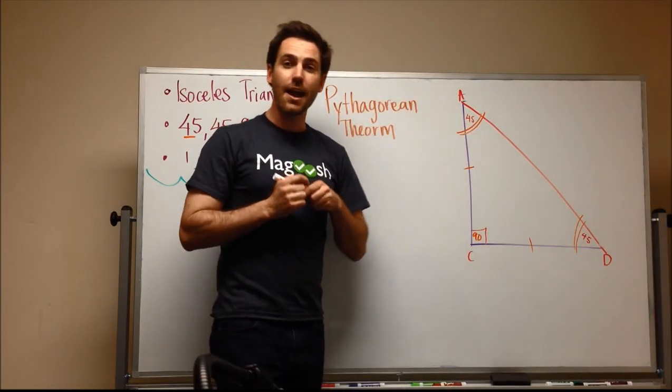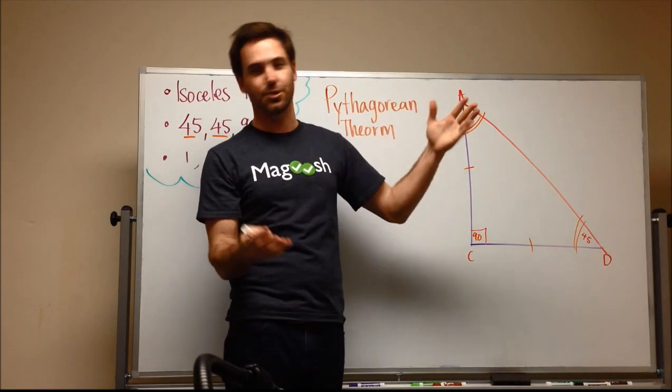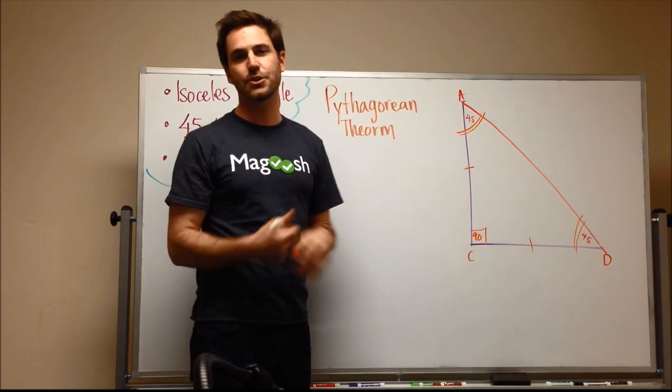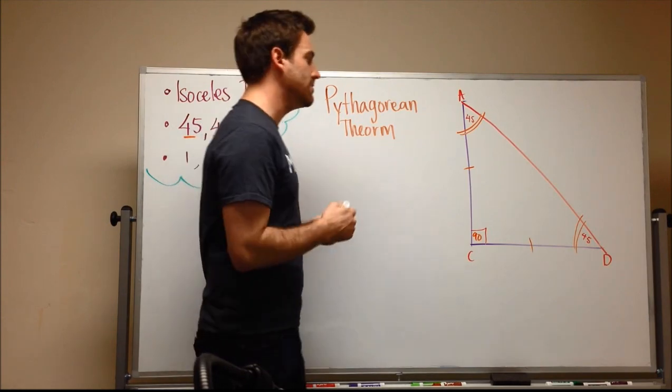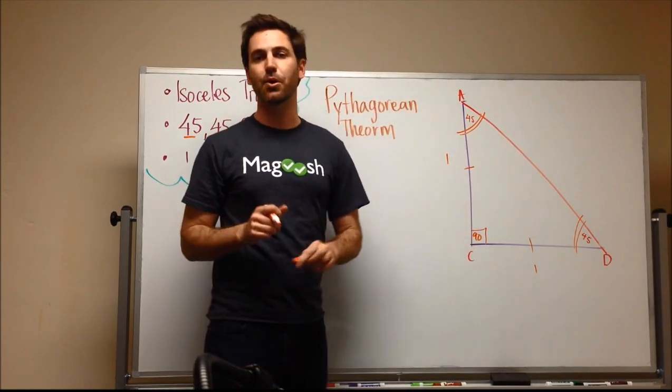Great. Now what we want to do is figure out, which we often have to do, one of the sides. So let's say in this square that this side was one and this side was one, just to keep things simple.